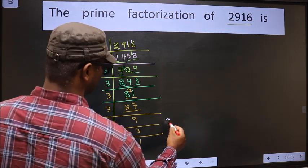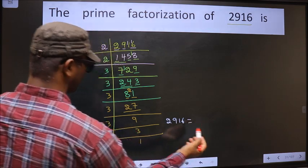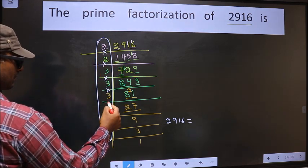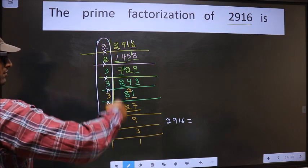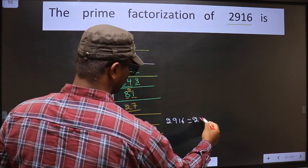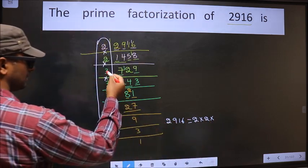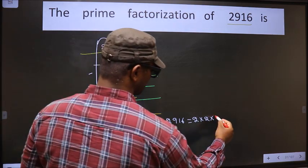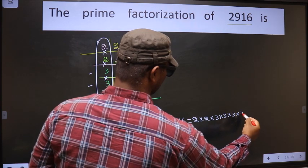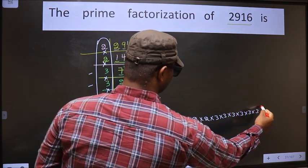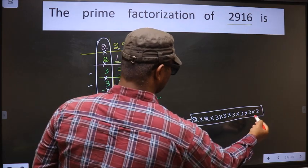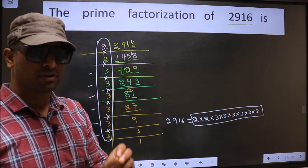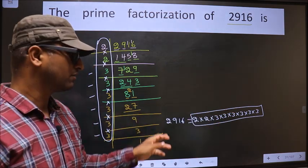So the prime factorization of 2916 is the product of these numbers — that is 2 × 2 × 3 × 3 × 3 × 3 × 3 × 3. How many times did we get 3? 1, 2, 3, 4, 5, 6. So 2 × 2 × 3 × 3 × 3 × 3 × 3 × 3. This is the prime factorization of 2916, also called the product of prime numbers of 2916.